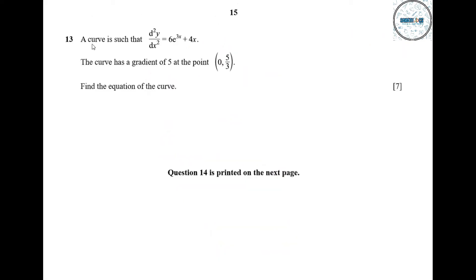Question 13. A curve is such that d²y/dx² equals 6e^(3x) plus 4x. The curve has a gradient of 5 at the point (0, 5/3). Find the equation of the curve. To find the equation of the curve, we integrate d²y/dx² to get dy/dx, then integrate again to get y.